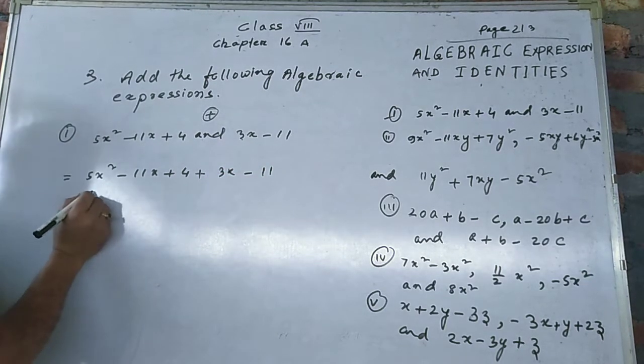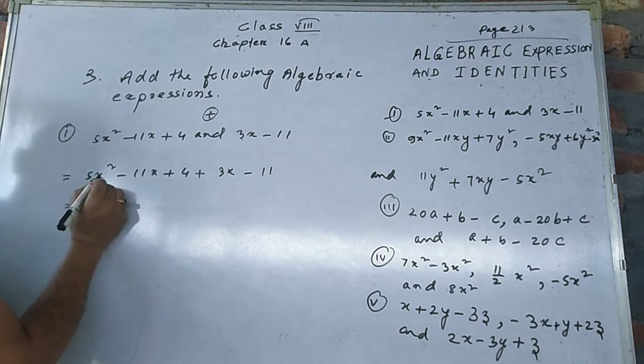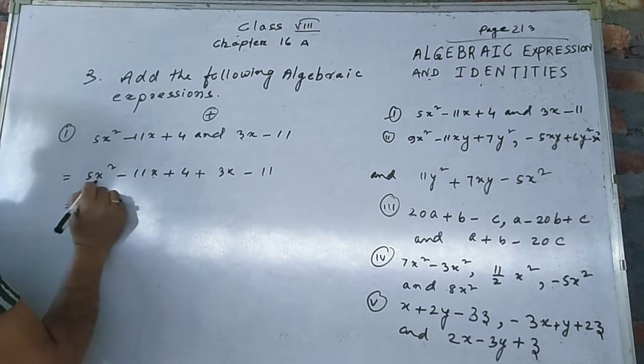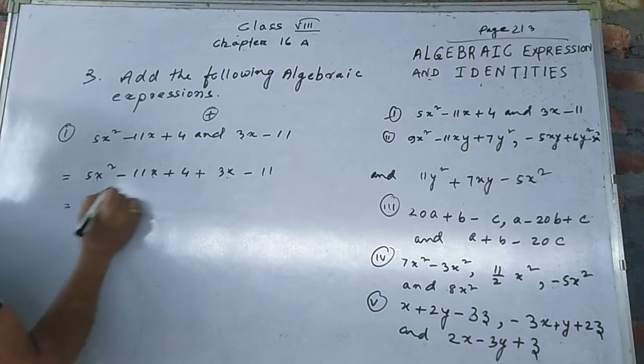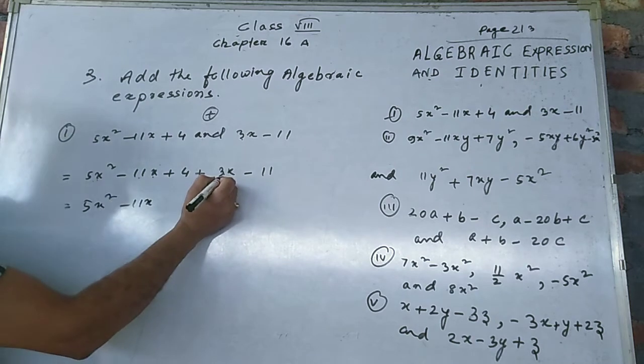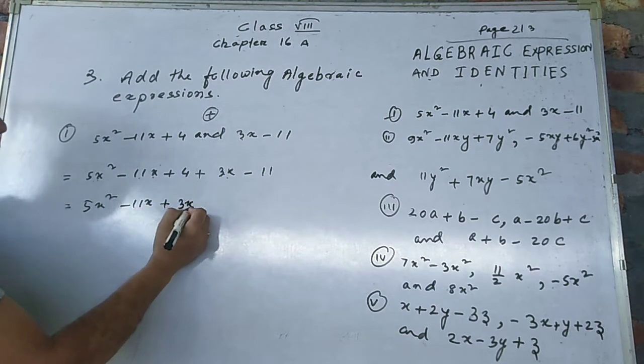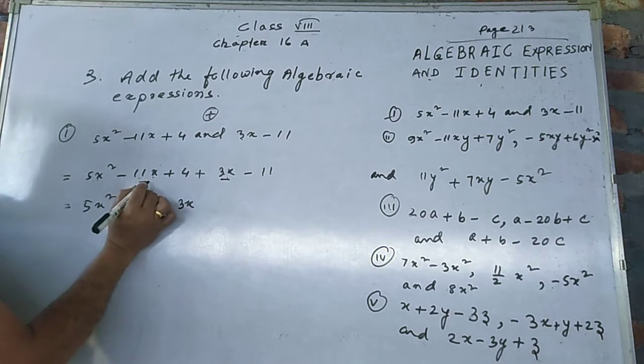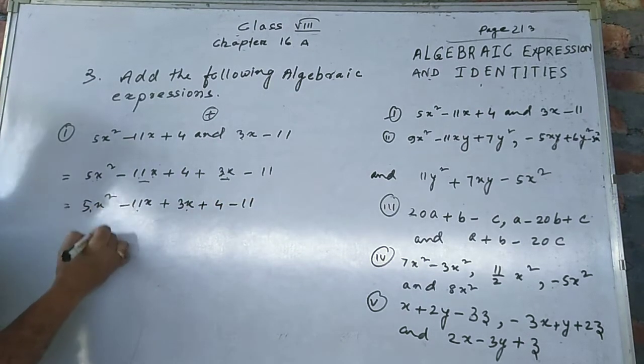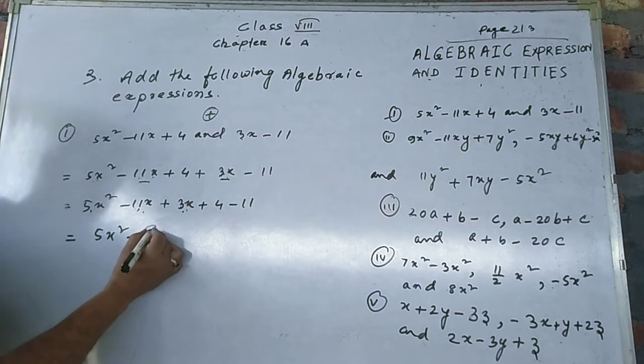Now arrange the like terms. Which is like term? 5x² - the variable x has power squared. Your x is here but power is one, therefore these terms are not like. You cannot add them. 5x² you keep same, minus 11x you write with 3x. Here 4 minus 11.